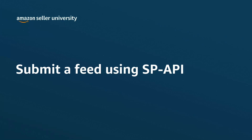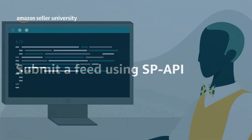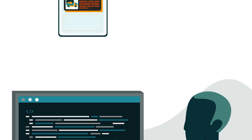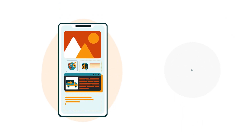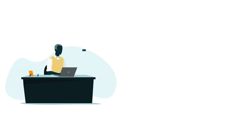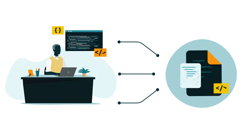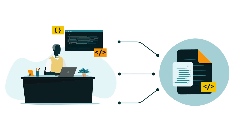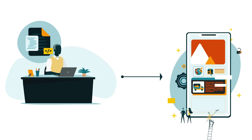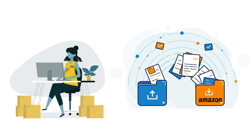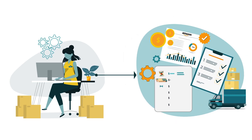Welcome to the training: Submit a Feed Using SP API. This video is designed for developers with fully integrated Selling Partner API applications. Developers can use the Selling Partner API for Feeds, or Feeds API, to build out an application so sellers can upload data to Amazon and perform actions in bulk.